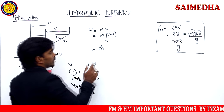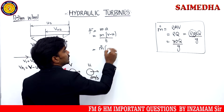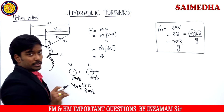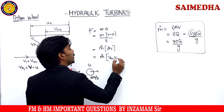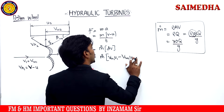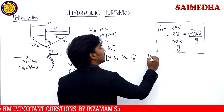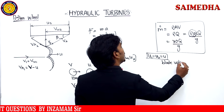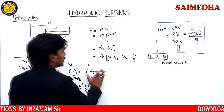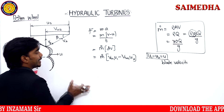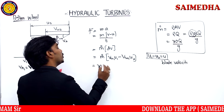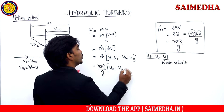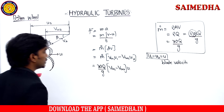Force equals mass flow rate times change in velocity. The horizontal component of velocity is what matters — that is Vw1·U1 minus Vw2·U2. Since U1 equals U2 equals U (blade velocities are equal for a Pelton wheel), force becomes ṁ(Vw1 minus Vw2) into U, which is WQ/g times (Vw1 minus Vw2) times U. Now the question is: what is Vw1 and what is Vw2?